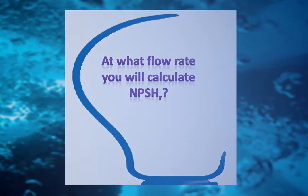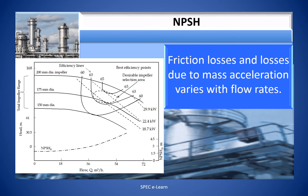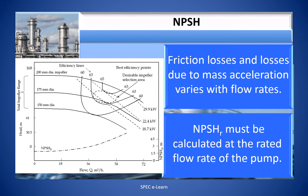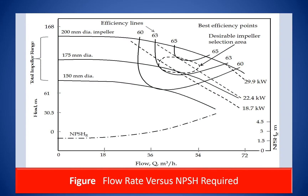At what flow rate should you calculate NPSH required? Friction losses and losses due to mass acceleration vary with flow rate. Since the pump is designed to run at the rated flow rate, NPSH required must be calculated at the rated flow rate. The NPSH variation with flow rate is illustrated in this figure. The line in red shows the relationship between NPSH required and volumetric flow rate — pump manufacturers supply this curve to customers. For example, the NPSH required at 50 cubic meters per hour is 4 meters.